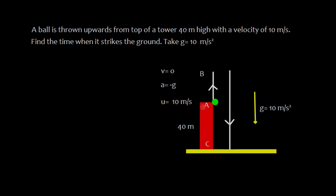Suppose this is a tower from A to C. The height is 40 meters. We throw the ball from A, it goes up to B, then from B it comes down to C. We need to find the time when it strikes the ground. Since acceleration due to gravity g is working downwards, we'll take the downward direction as positive and upward direction as negative.